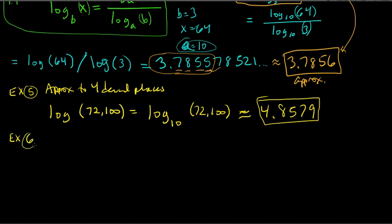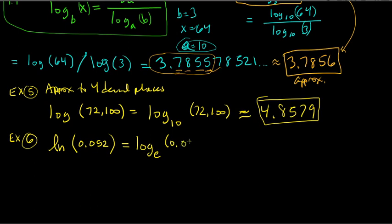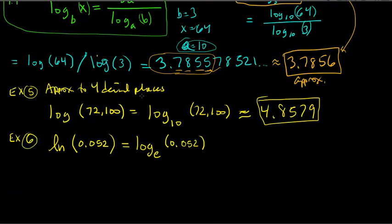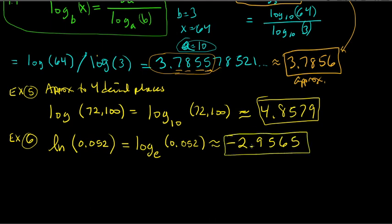Next, the natural log of 0.052. This is the same as log base e of 0.052. Use the LN button on your calculator — it's underneath the LOG button, next to the 4. The calculator gives approximately negative 2.9565 to four decimal places.